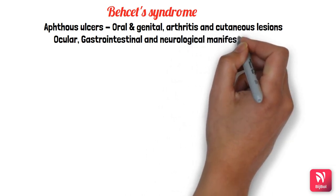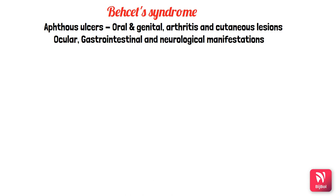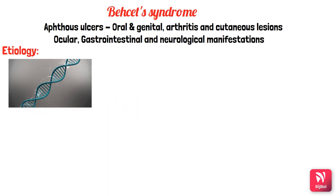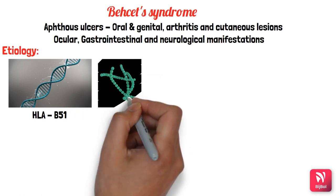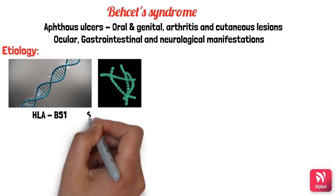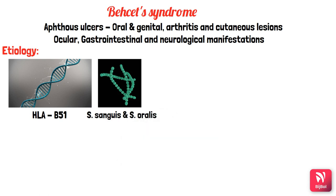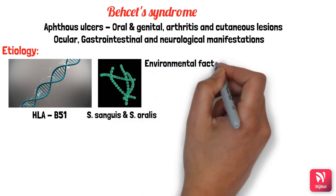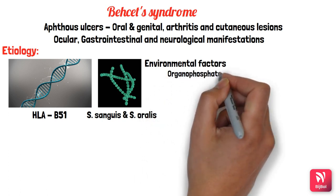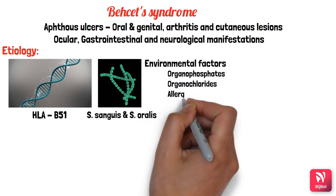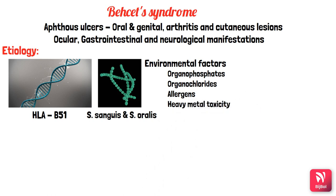Some authors describe a classic triad for Behçet's syndrome: recurrent oral aphthous ulcers, genital ulcers, and ocular lesions. The etiology includes a genetic component — positive family history with HLA-B51 — and a bacterial component involving Streptococcus sanguis and Streptococcus oralis, similar to aphthous ulcers. Environmental factors such as organophosphate and organochloride poisonings, allergens, and heavy metal intoxication can also stimulate Behçet's syndrome.